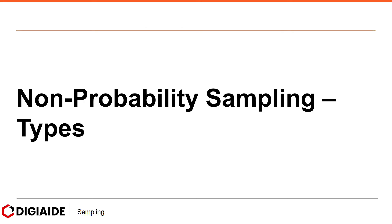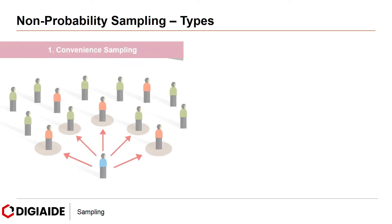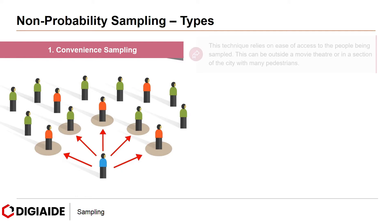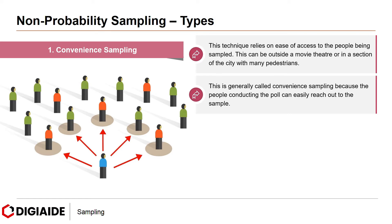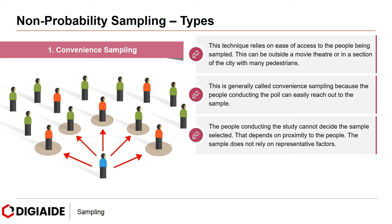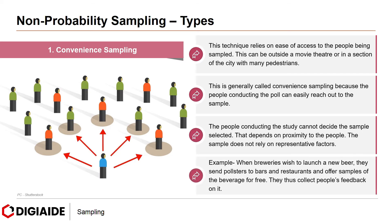Now let's look at the types of non-probability sampling. The first is convenient sampling. This technique relies on ease of access to the people being sampled — for example, outside a movie theater or in a section of the city with many pedestrians. The people conducting the poll can easily reach out to the sample, but cannot decide who is selected — that depends on proximity. For instance, when breweries wish to launch a new beer, they send pollsters to bars and restaurants and offer samples for free, collecting people's feedback.